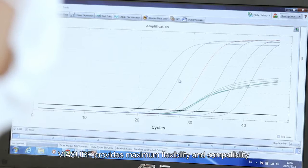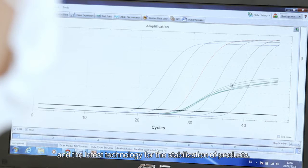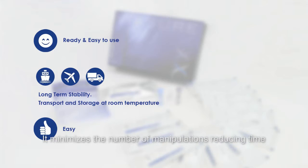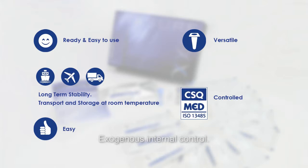ViaSure provides maximum flexibility and compatibility with leading open system thermal cyclers and the latest technology for the stabilization of products. Ready-to-use kits with all the necessary components for the testing. Long-term stability that facilitates transport at room temperature. Easy to use. It minimizes the number of manipulations reducing time and possible errors. Versatile. Possibility to analyze from 1 up to 96 samples per testing. Exogenous internal control. Evaluated and validated according to ISO 13485 and CE marked.